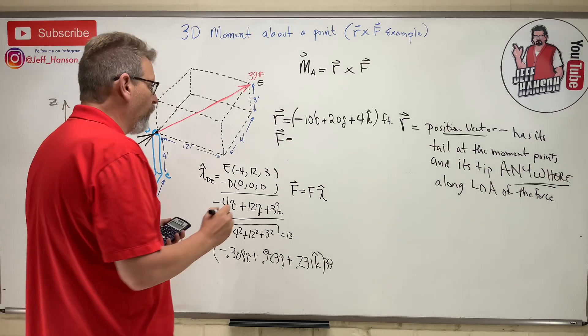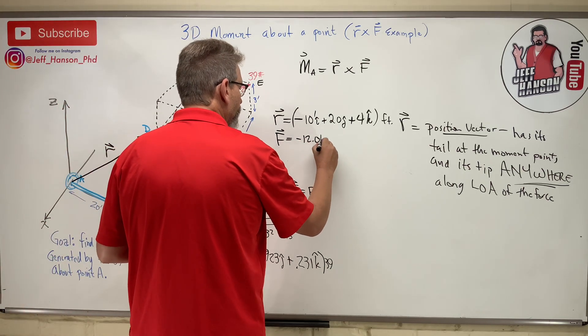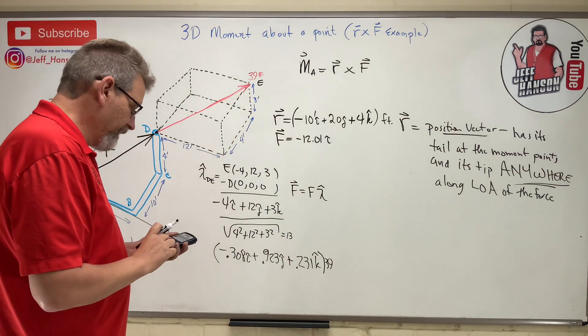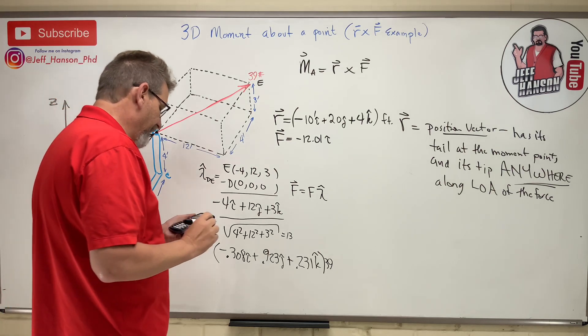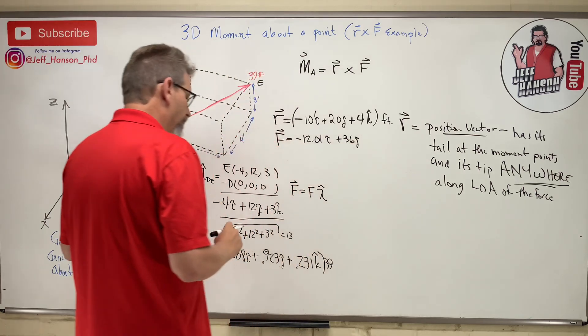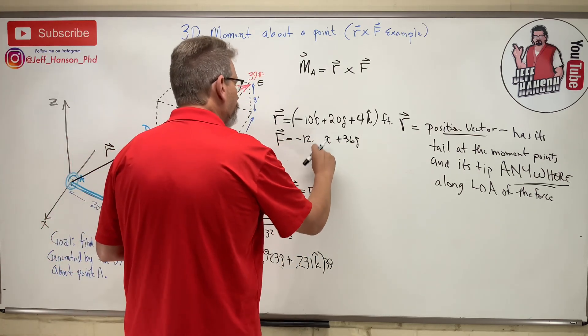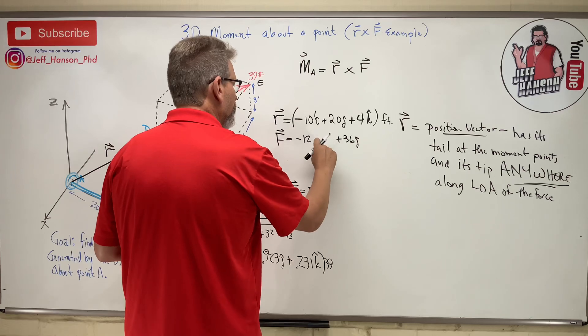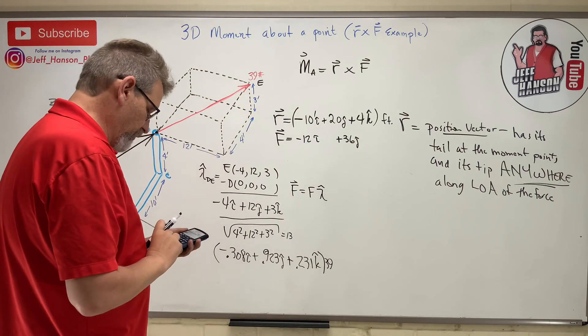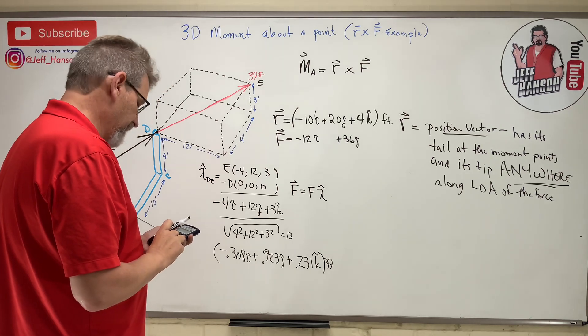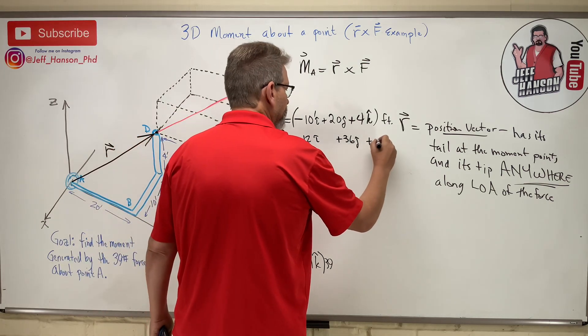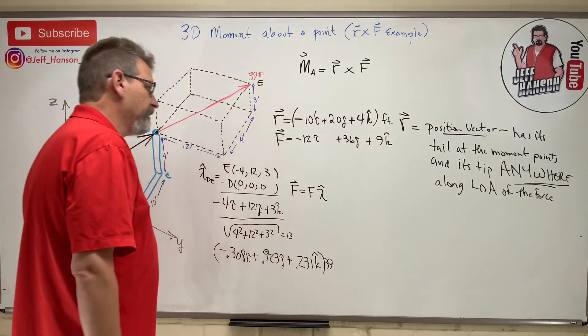0.308 times 39 is 12.01. And then 0.923 times 39, 36. Let's just call that 12, that rounds to just 12, so we have whole numbers here because they are whole numbers.